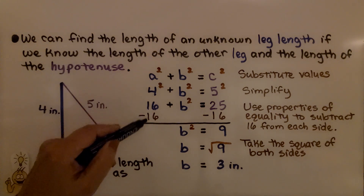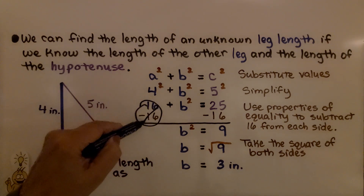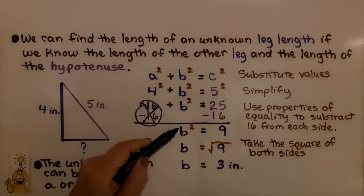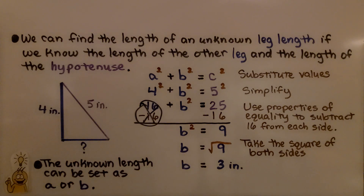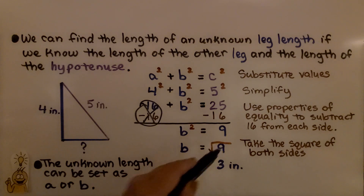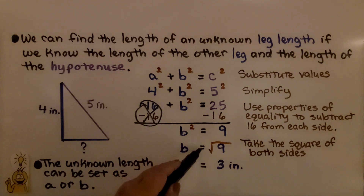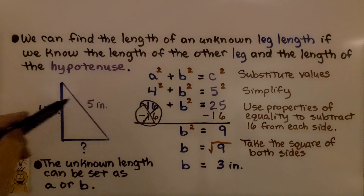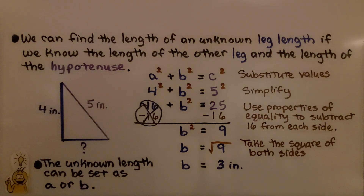By taking away 16 from both sides, we eliminate it and get 25 − 16 = 9, so b² = 9. We take the square root of both sides — removing the exponent 2 and putting a radical sign around 9. We get b = √9. Since 3 × 3 = 9, the square root of 9 is 3, so b = 3 inches.